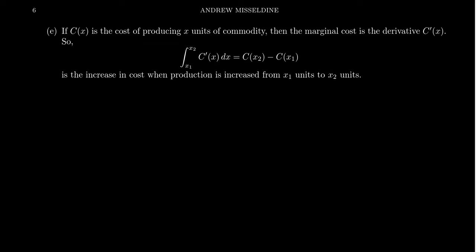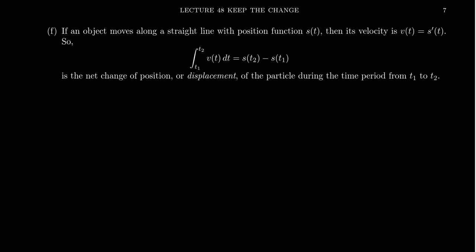Again, these are just some examples pulling from different sciences. If we take the cost function C of X, it's the cost associated with producing X items, X commodities. So we could be talking about the cost of producing X rolls of toilet paper or whatever. C prime of X represents the marginal cost, the rate at which cost is changing as production increases. Well, if we integrate the marginal cost, we'll get the net cost. That is, the cost to increase from production level X1 to production level X2.